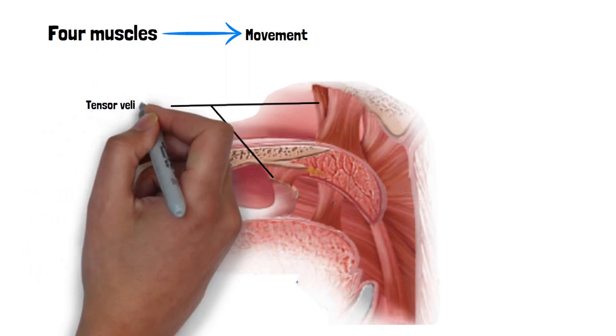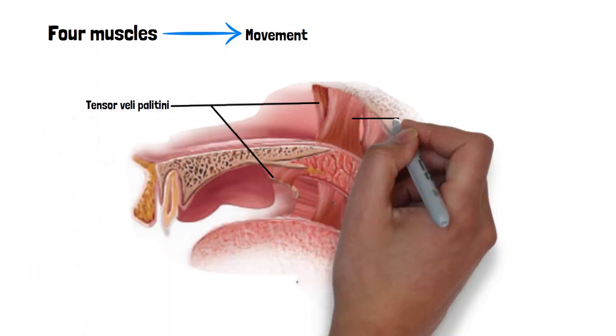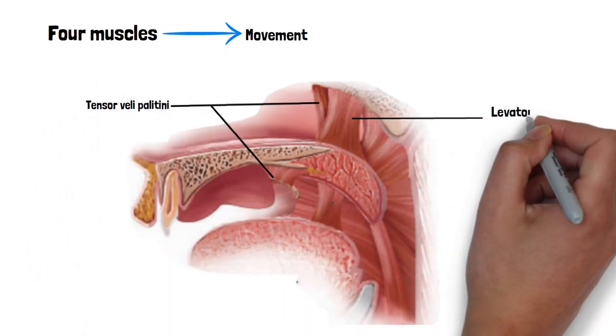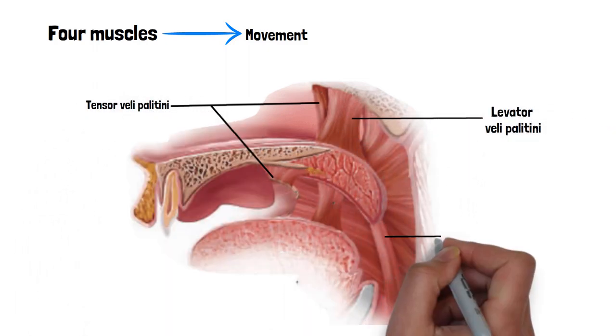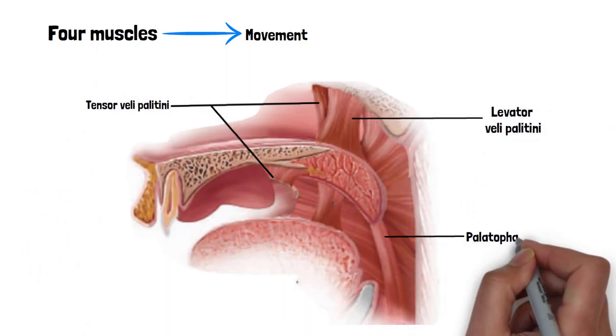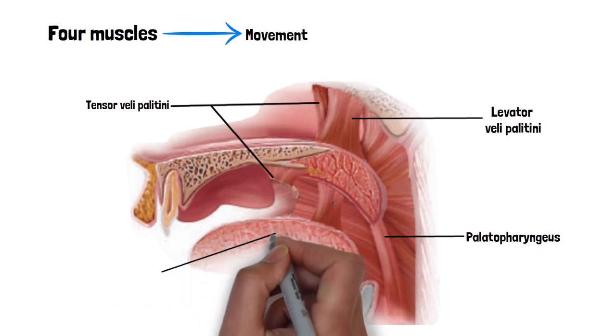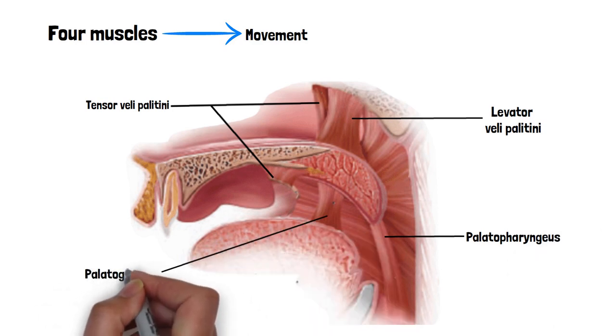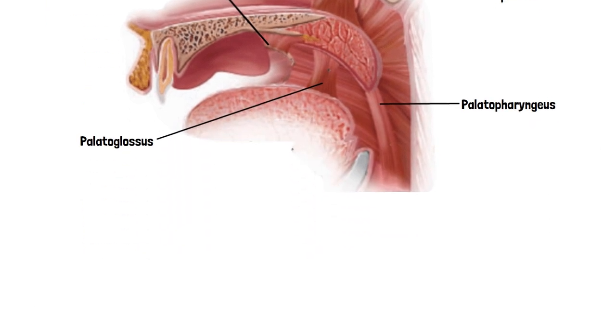These five muscles are: tensor veli palatini, levator veli palatini, palatopharyngeus muscle, palatoglossus muscle, and the musculus uvulae.